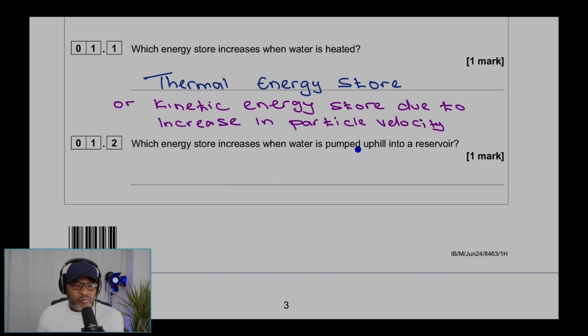1.2: Which energy store increases when water is pumped uphill into a reservoir? That would be gravitational potential energy store due to changing height.